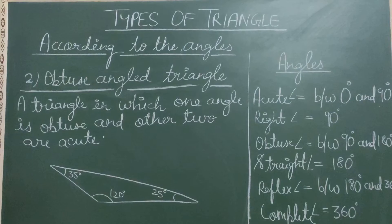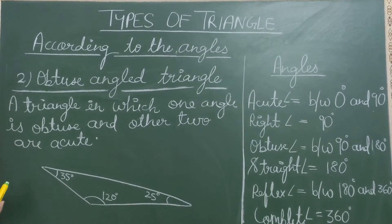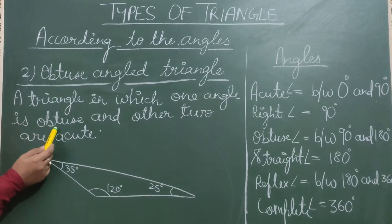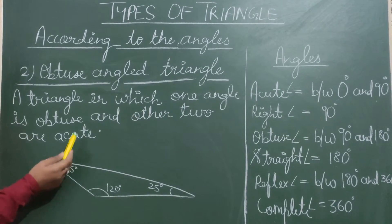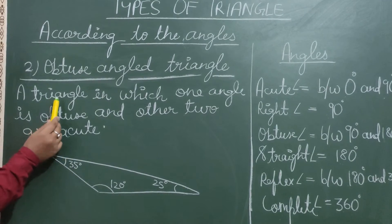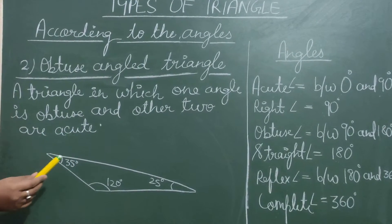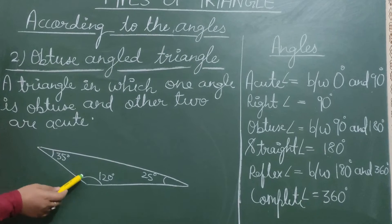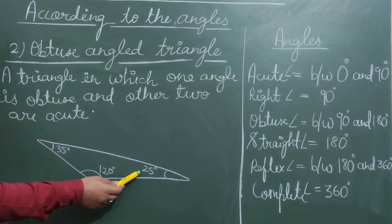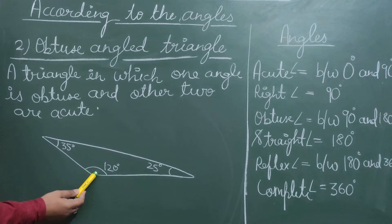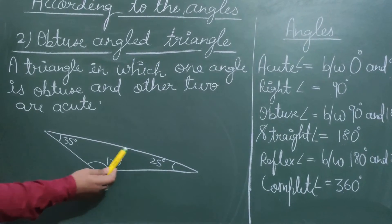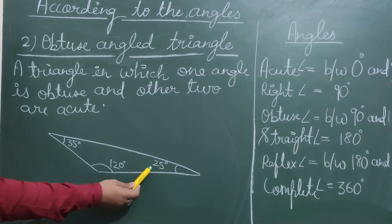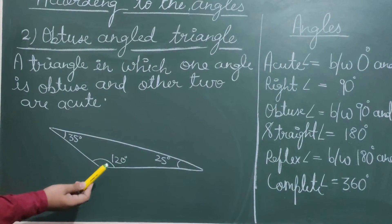The second type of triangle according to angles is the obtuse angle triangle. A triangle in which one angle is obtuse and the other two are acute is called an obtuse angle triangle. For example, this triangle has angles of 120 degrees, 35 degrees, and 25 degrees. The 120-degree angle is obtuse, and 25 and 35 are acute angles. So whenever one angle is obtuse and the other two are acute, the triangle is called an obtuse angle triangle.